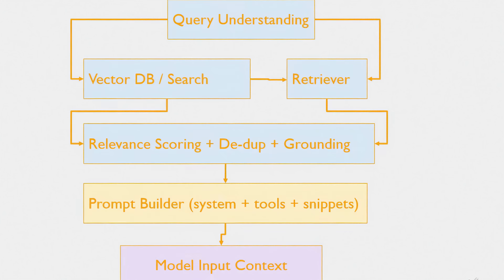Retrieval Augmented Generation, or RAG. What if the model needs up-to-date facts or specific docs? It doesn't guess — it looks. Query understanding reformulates your question into smart searches. A retriever looks in a vector database or search index for relevant passages. Then we do relevance scoring, deduplication, and grounding — picking the best sources and anchoring the answer to them. Finally, a prompt builder stitches those snippets together with system rules and tool instructions, so the model sees the right facts at the right time. RAG fetches, filters, and frames real information so the model answers with support, like citing a handbook during an exam.